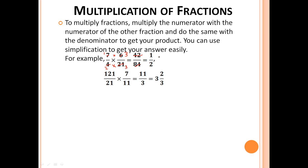So we get 1 times 3, which is 3, over 2 times 3, which is 6. Now we can simplify this further to get 1/2. So we got the answer more easily. In big numbers, this simplification makes multiplication very easy.